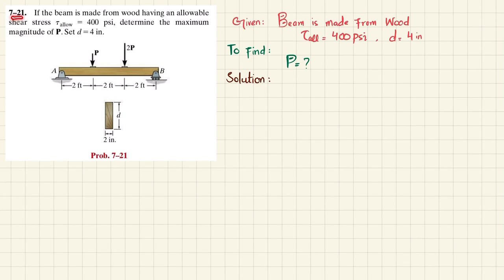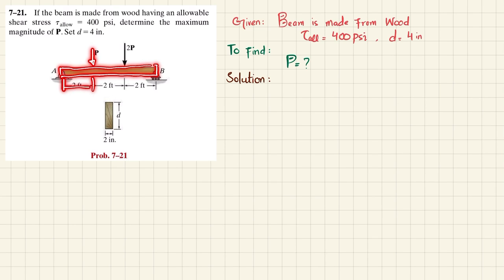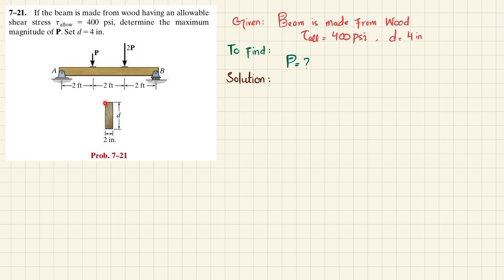Welcome back. Problem 7-21. The statement is: if a beam is made from wood having an allowable shear stress of 400 psi, determine the maximum magnitude of P. D is equal to 4 inches. The beam AB is a simply supported beam having a point load P at 2 feet from A and a load of 2P at 2 feet from B. The cross-section is rectangular with width 2 inches and d equal to 4 inches.